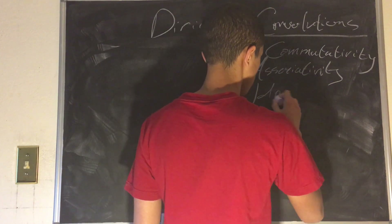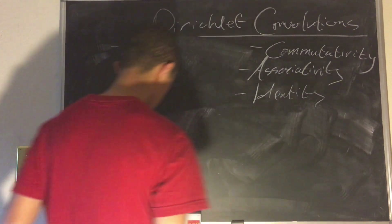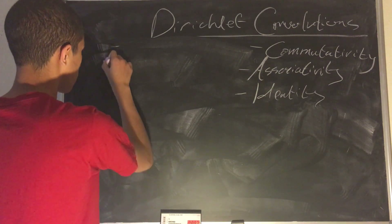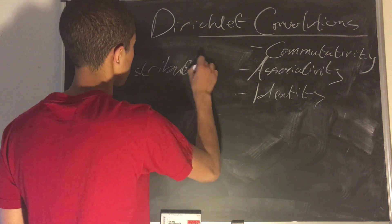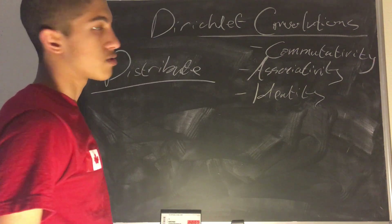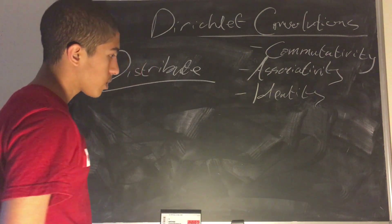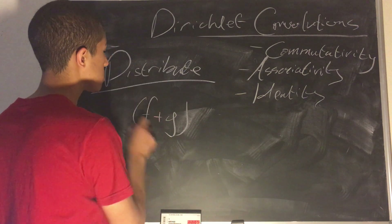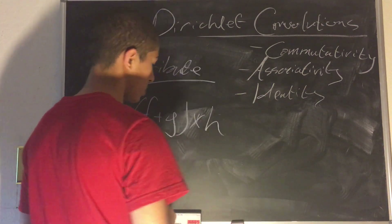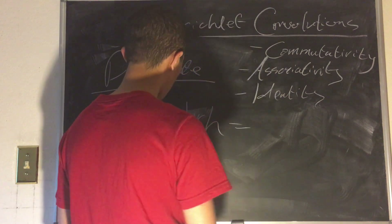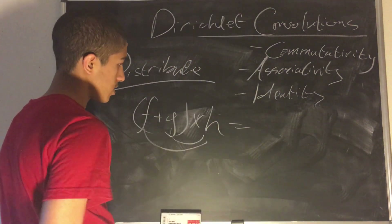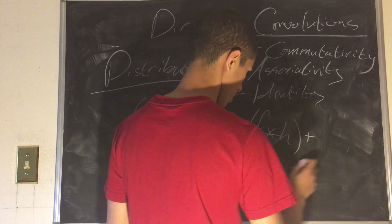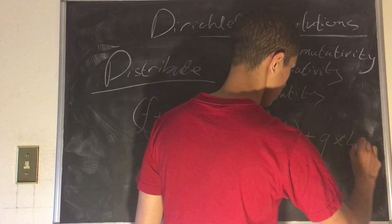That was the identity property. We also have distributivity: the Dirichlet convolution distributes over functions. We have additive distributivity, which means that (f plus g) convoluted with h is equal to f convoluted with h plus g convoluted with h — you just FOIL it.